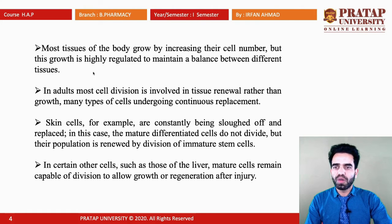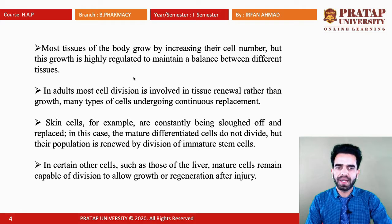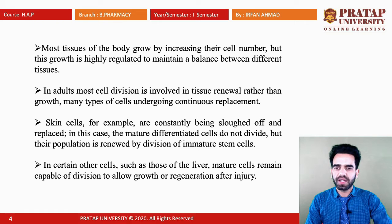Most tissues of the body grow by increasing their cell number, and this growth is highly regulated to maintain a balance between different tissues. In adults, most cell division is involved in tissue renewal rather than growth. Many types of cells undergo continuous replacement, and by that replacement cell division occurs.